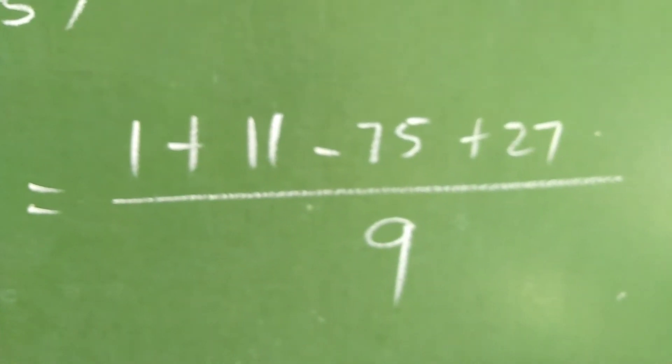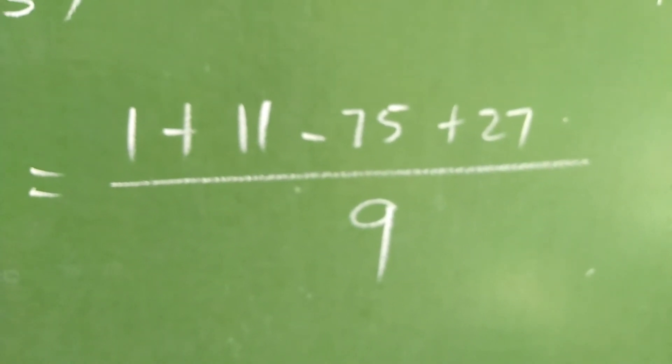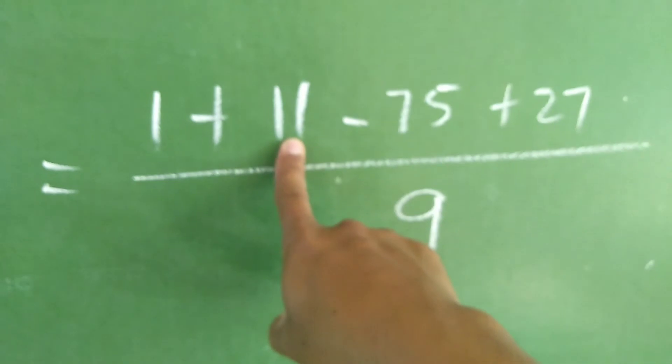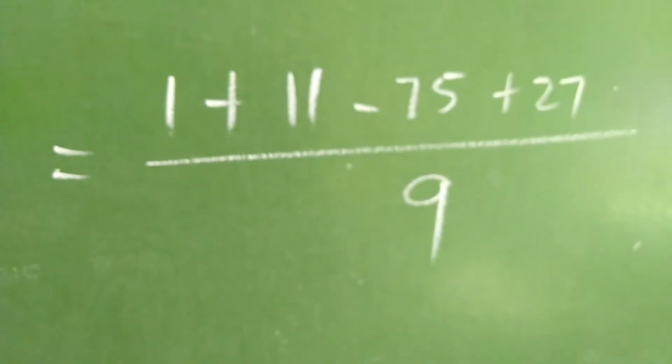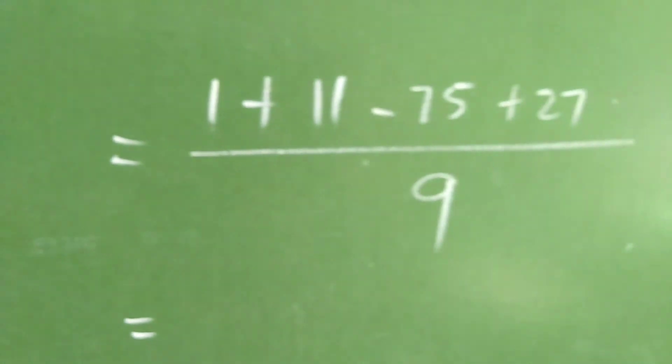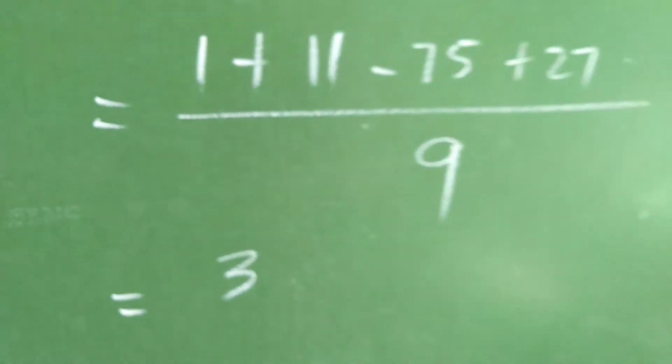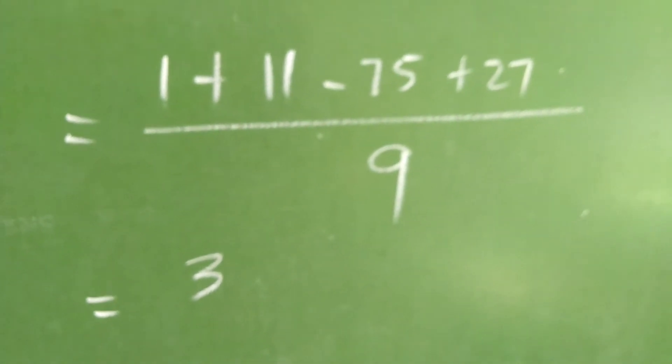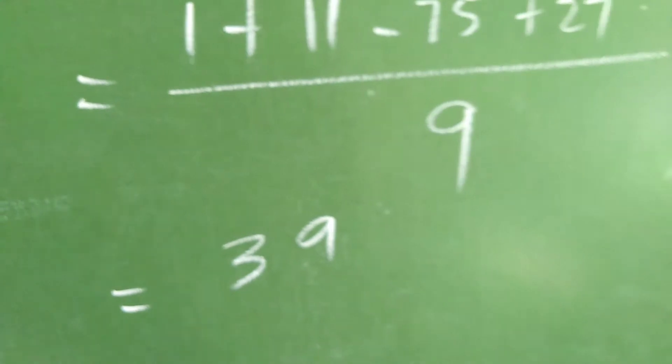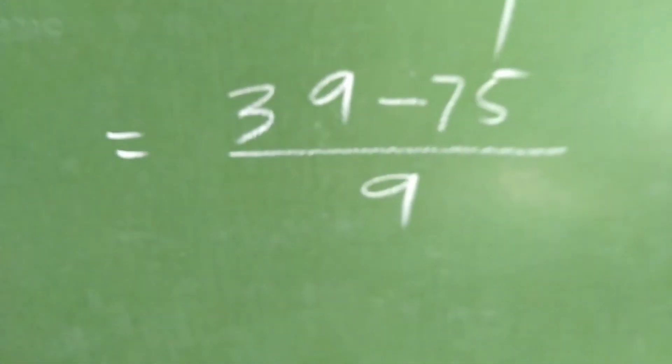Next. Similar term or similar sign. So, we have 1 plus 11 plus 27. So, we have 12 plus 27. We have 30. Ilan? 39 minus 75 divided by 9.